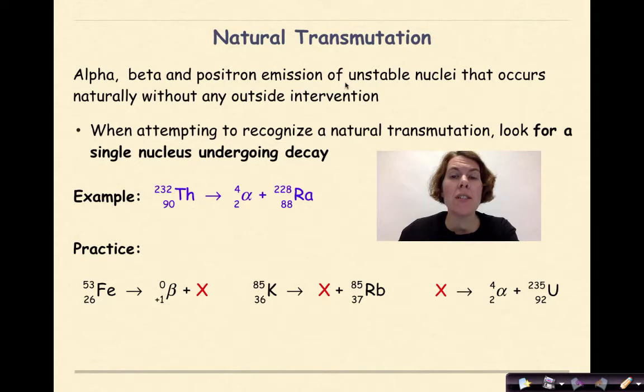Let's talk specifically about natural transmutation. Alpha, beta, and positron emission of unstable nuclei that occurs naturally without any outside intervention. When attempting to recognize a natural transmutation, look for a single nucleus undergoing decay.